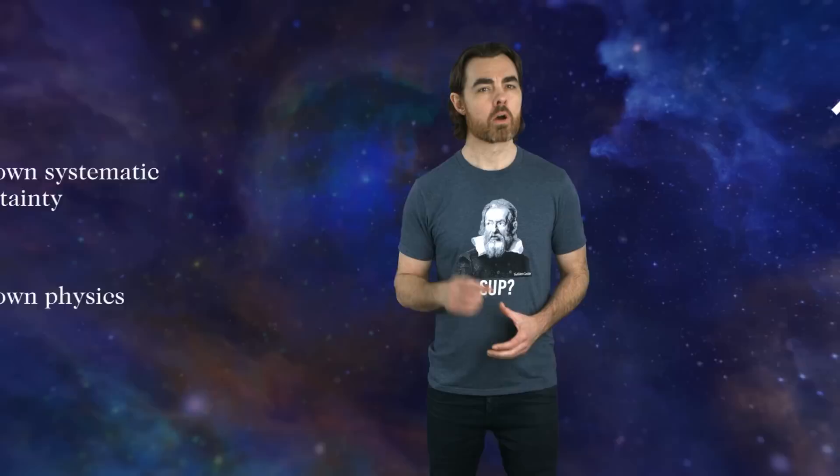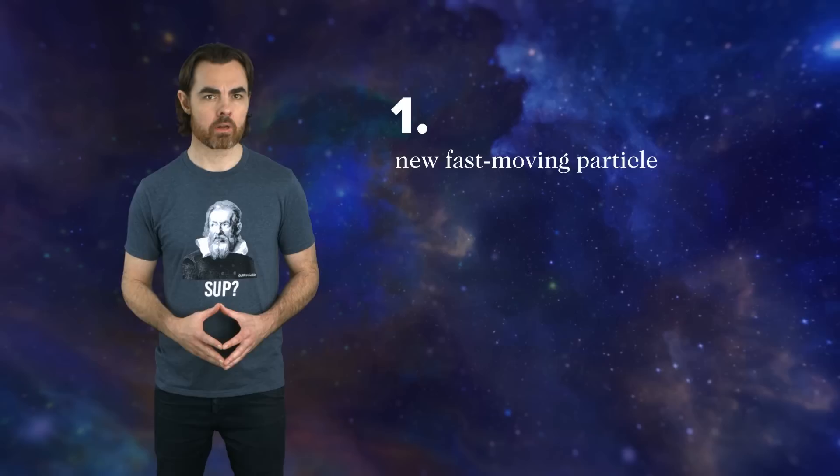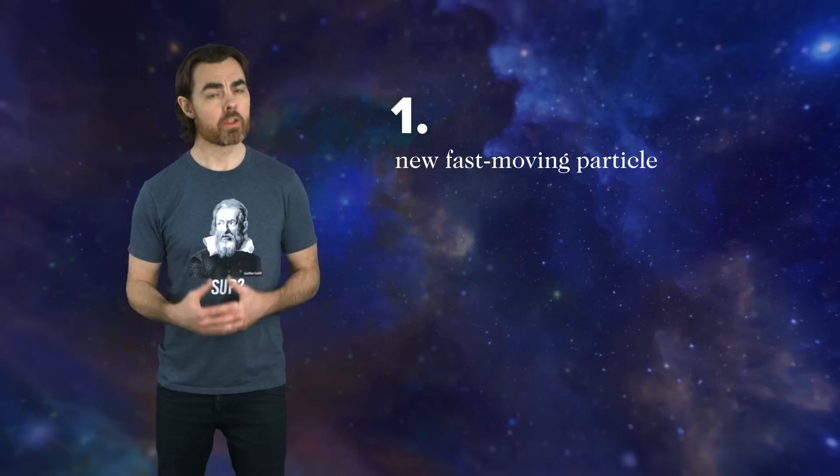There are a few options, so let's start a new list. One, a new type of very fast-moving particle in sufficient numbers could skew the energy balance of the early universe and mess up the calculation. That particle could be the sterile neutrino, a hypothetical non-interacting neutrino that isn't part of the standard model.